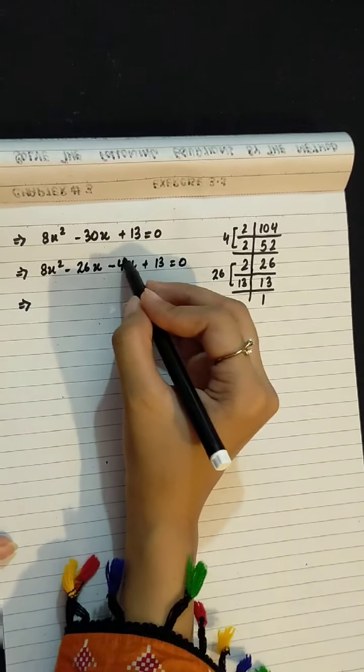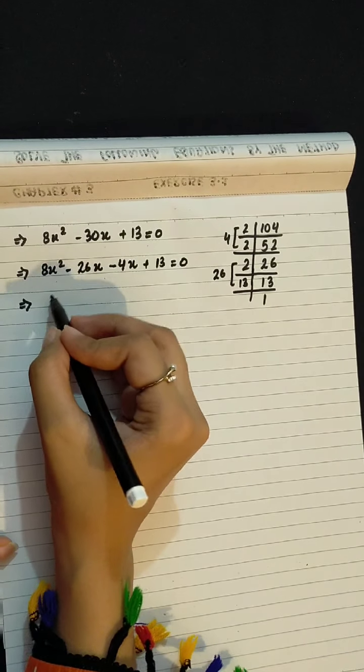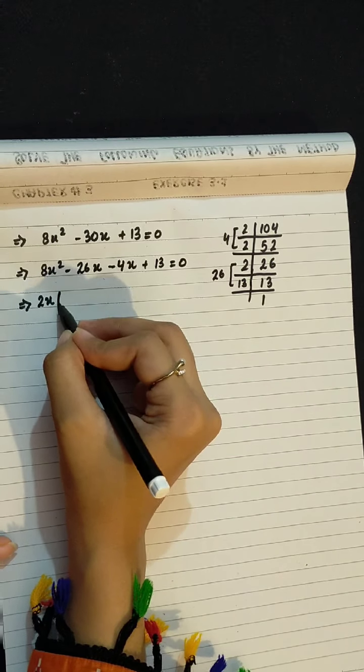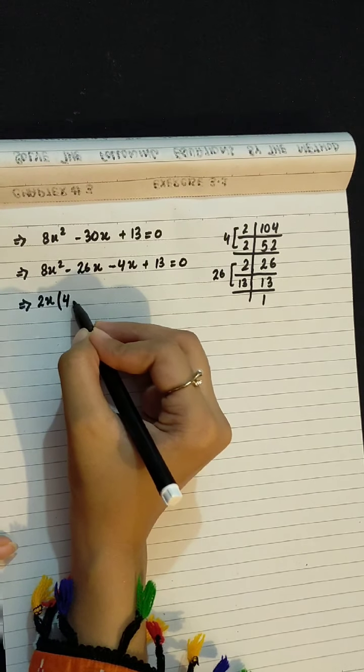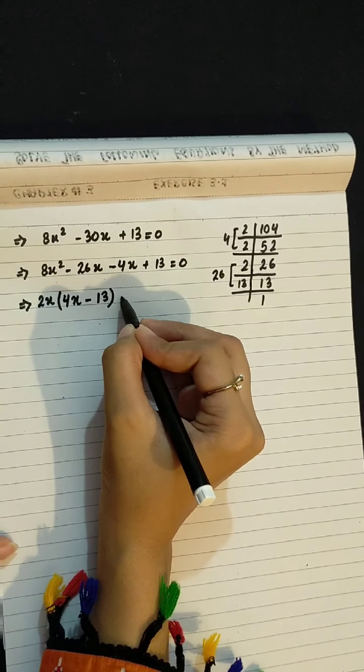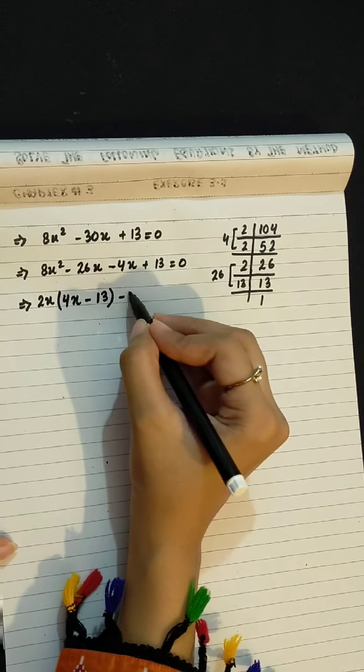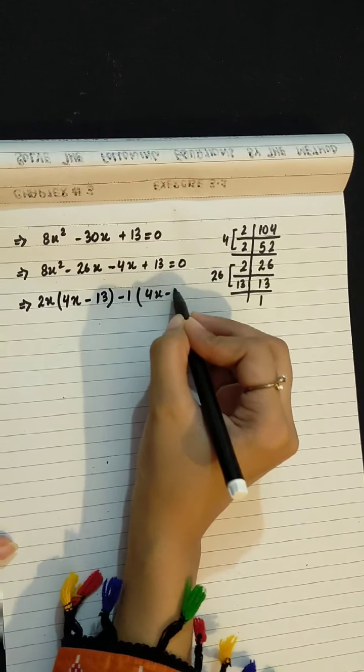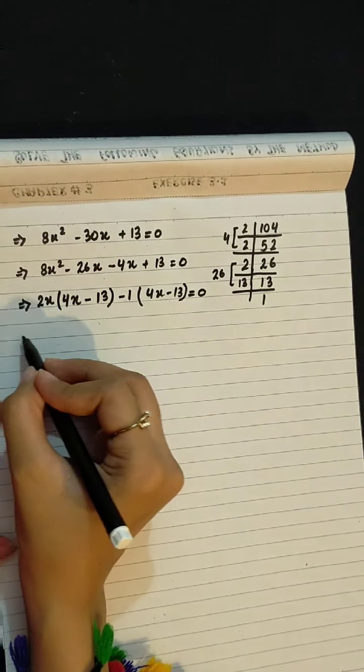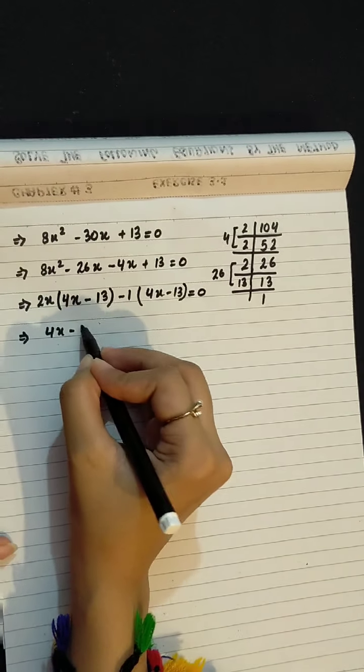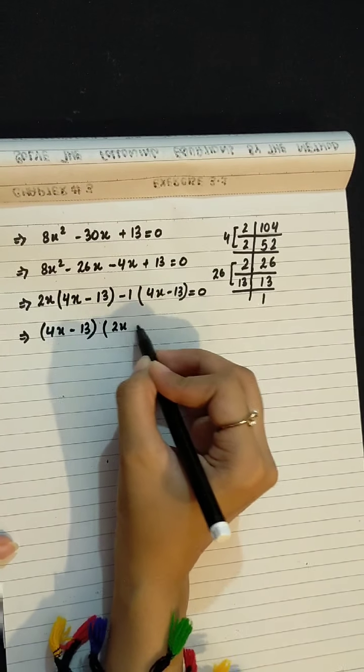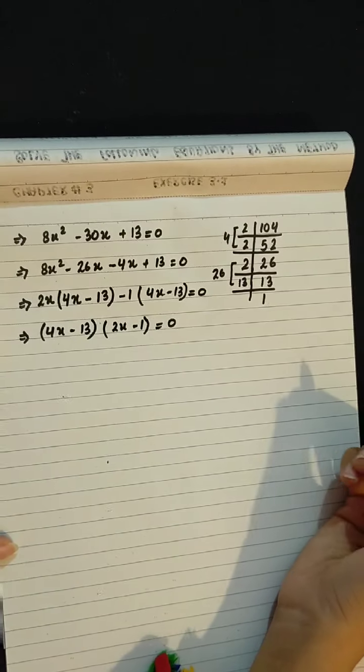This is common. These two are common. What are our factors? 2x into 2x. Here the remaining, we have 4x minus 13. Here what are our factors? Minus 1. 4x minus 13 equals to 0. 4x minus 13 common, 2x minus 1 equals to 0.